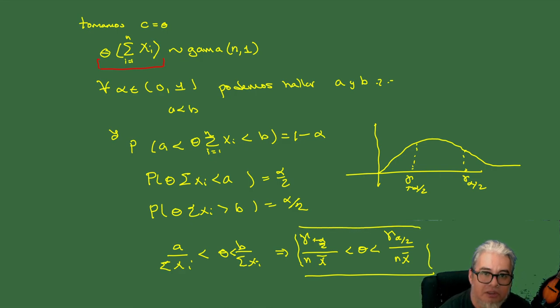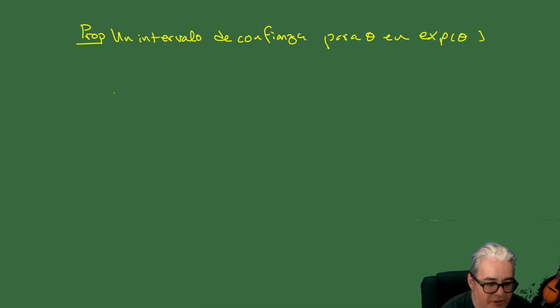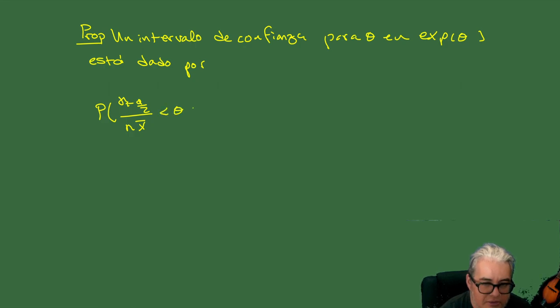Un intervalo de confianza para θ en la distribución exponencial(θ) está dado por: P( γ_(1−α/2) / (n·x̄) < θ < γ_(α/2) / (n·x̄) ) = 1 − α.